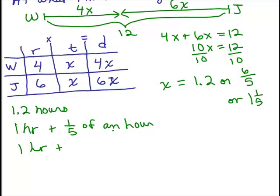Well, if we want to get that in minutes, how many minutes are in an hour? That's 1 fifth of 60 minutes. So that's 1 fifth times 60. That gives you 12 minutes.